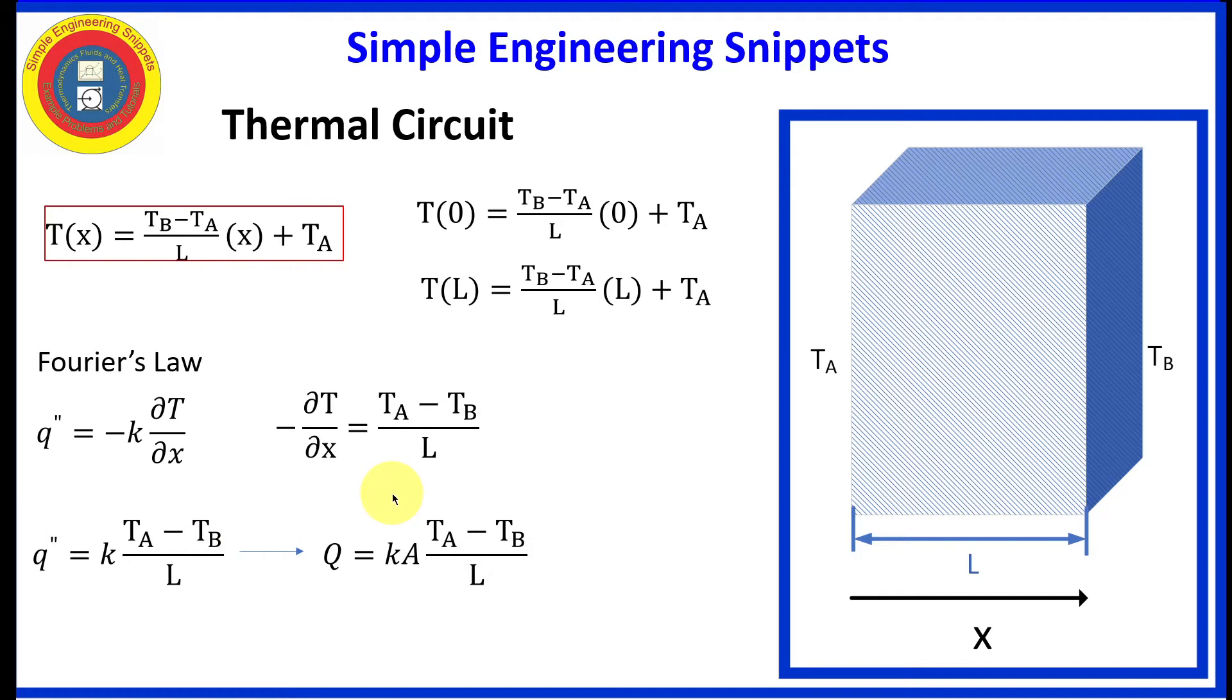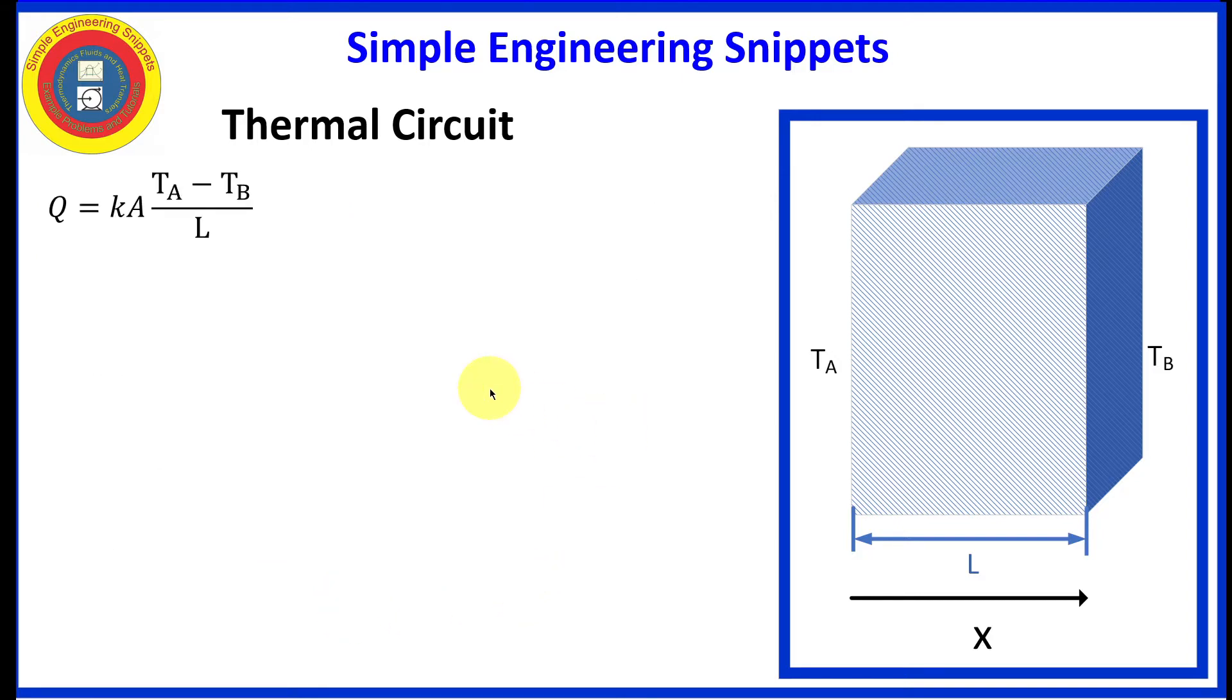And we can multiply both sides by the area and obtain that the heat transfer rate is equal to this equation. So now we actually know the heat transfer rate through this slab. But if we were to apply this to a multi-component composite wall with two or three or four slabs, that can get quite complex.